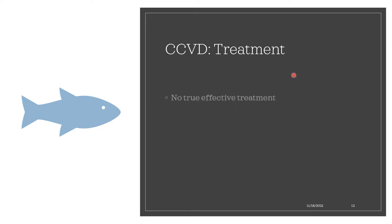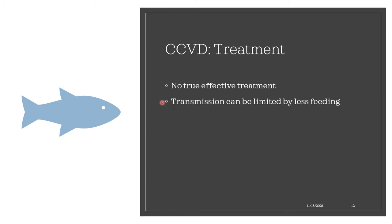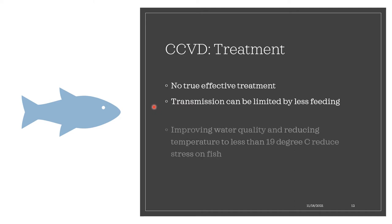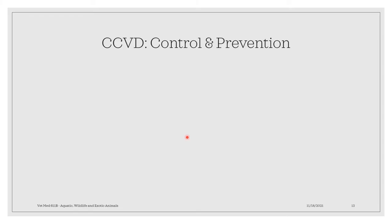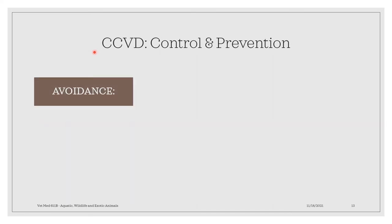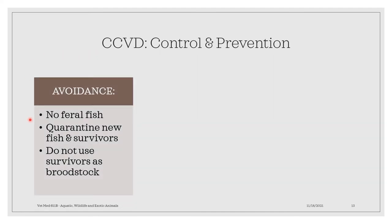What are the treatments for CCVD? There is no effective treatment for CCVD since this is a viral disease. Transmission can be limited by less feeding, by improving the water quality, and by reducing temperature to less than 19 degrees centigrade, as well as reducing stress on the fish. For control and prevention of CCVD, this includes avoidance of feral fish.